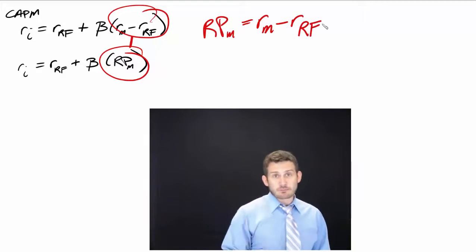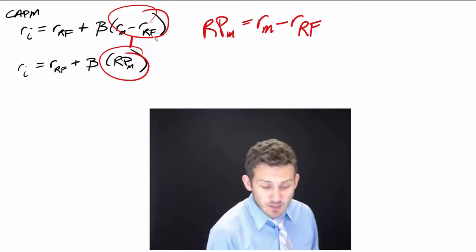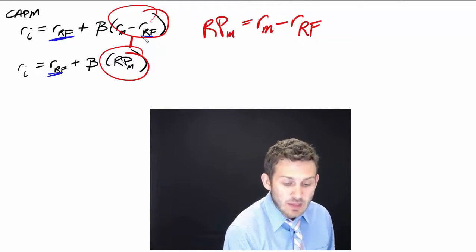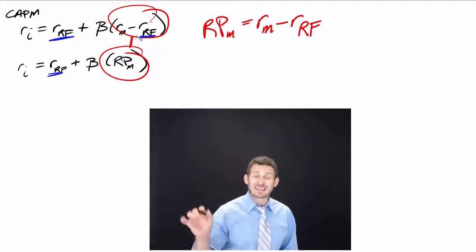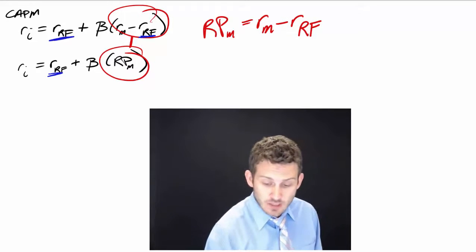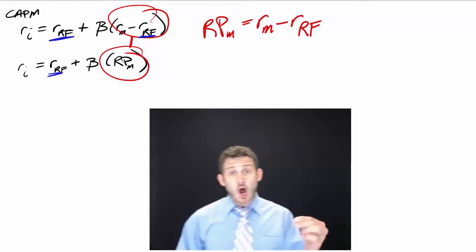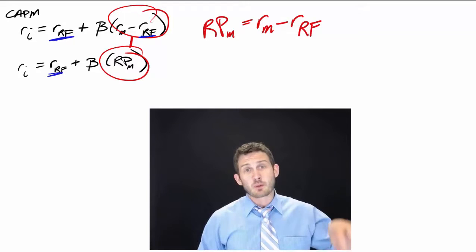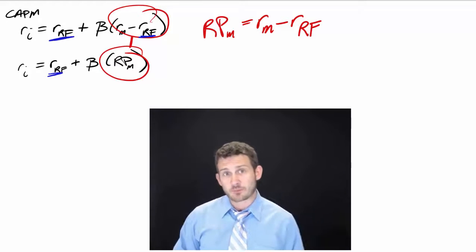Now, the reason we have to make this adjustment off of beta is because we already start off with a risk-free rate on the front end, and we have to subtract it off, otherwise it'll get double counted. That's why we do that in the CAPM equation.